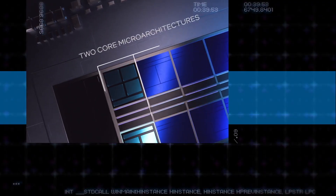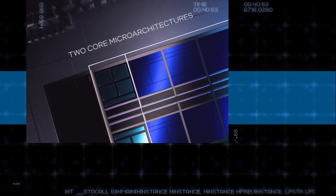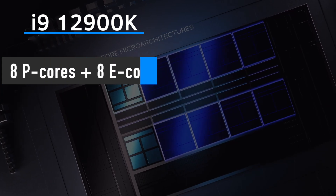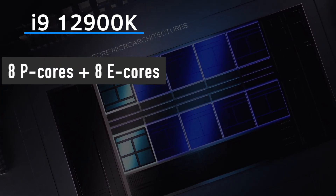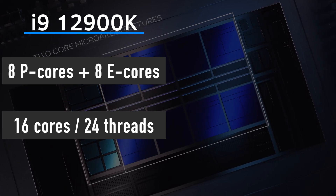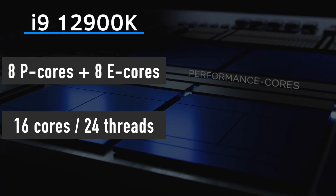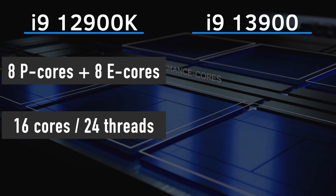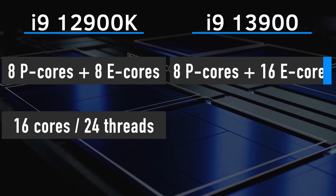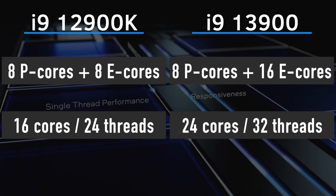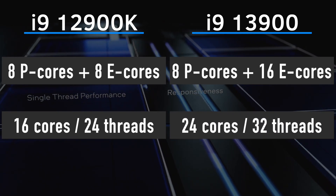Before we get to the benchmarks, let's compare 12th gen and 13th gen specifications. The 12900K has 8 performance P-cores and 8 efficiency E-cores for a total of 16 cores and 24 threads. The 13900 and 13900K both have 8 P-cores and 16 E-cores for a total of 24 cores and 32 threads.